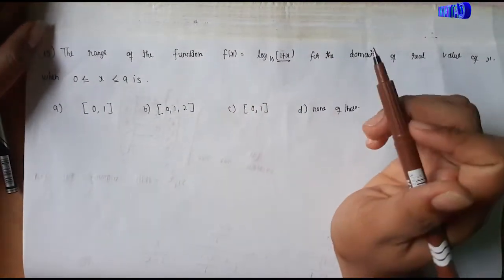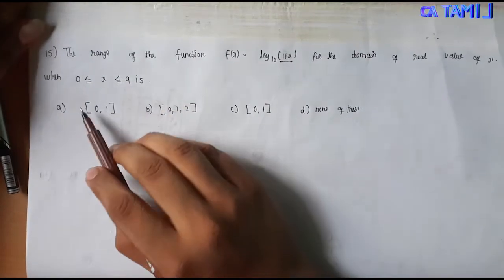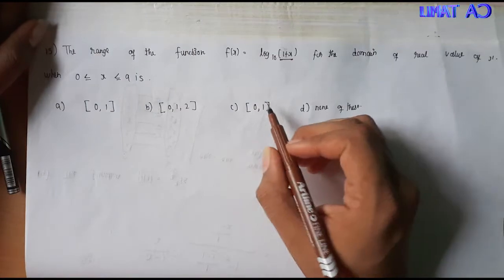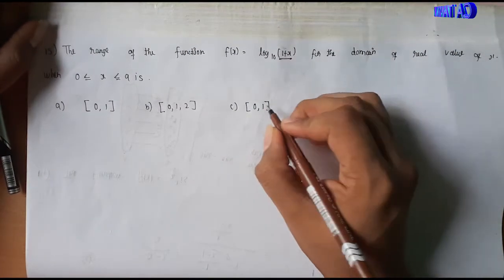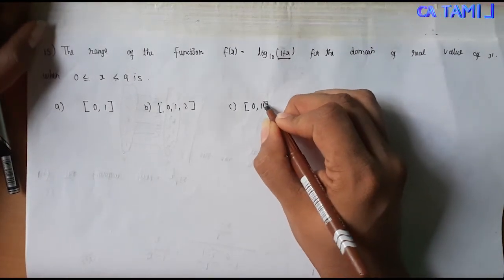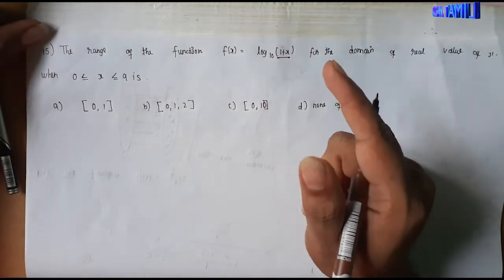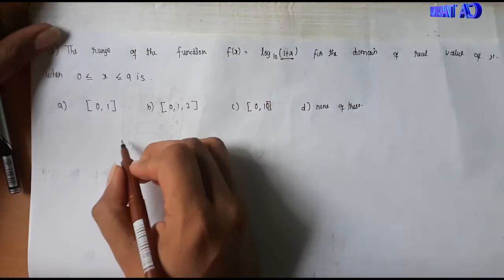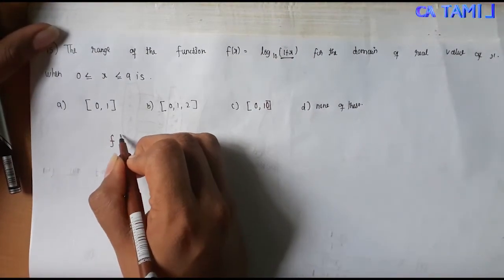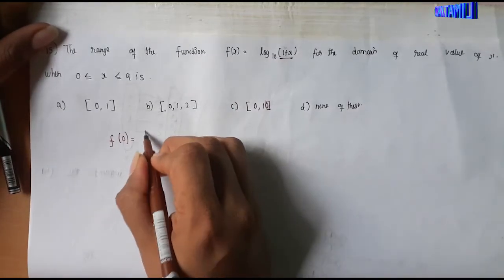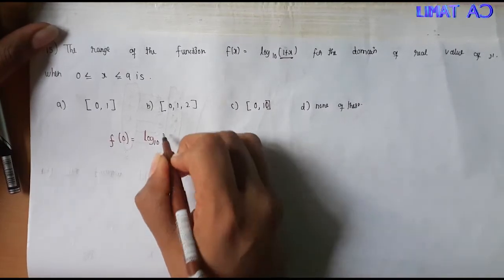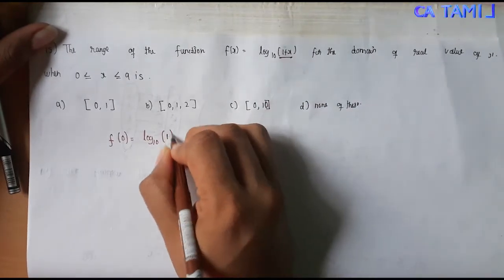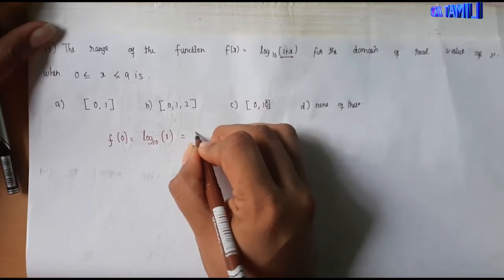So if we check the options: option A is 0 to 1; option B is 1 to 2. Let's solve the range of function. Apply f of 0: log base 10 of (1 plus 0) = log 1, and log 1 value is 0.